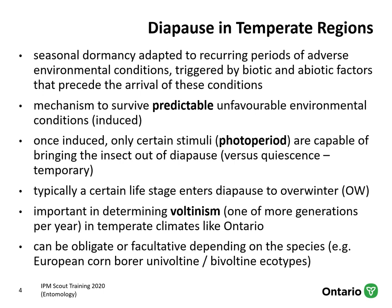For example, European corn borer — a pest you'll hear about in corn — can have either univoltine or bivoltine ecotypes, meaning depending on the ecotype, it might have one generation per year or be capable of multiple generations per year. Diapause is therefore important in terms of the number of broods or generations an organism has.